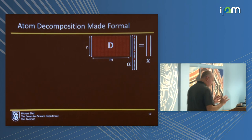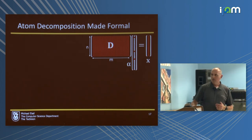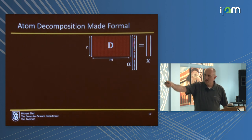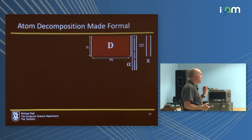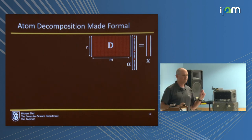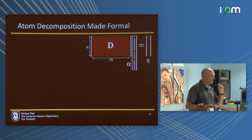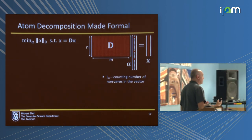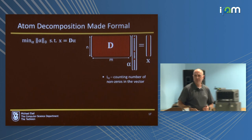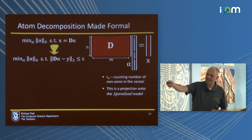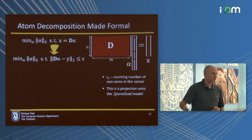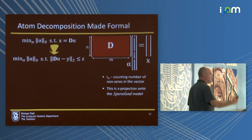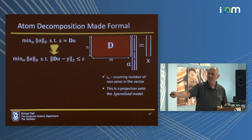Let's rephrase in mathematical terms. I give you D, the dictionary, and x, the signal, and ask you to find alpha. It's an underdetermined linear system of equations — you have infinitely many possible solutions. But what you have to do is search for the sparsest solution: the one with the fewest non-zeros. L0 here denotes the number of non-zeros in vector alpha. Typically, we don't get a signal x that exactly equals D·alpha; we get a noisy version y. So we search for alpha such that D·alpha is at most epsilon away from y while alpha is sparse. This is basically a projection onto the model.